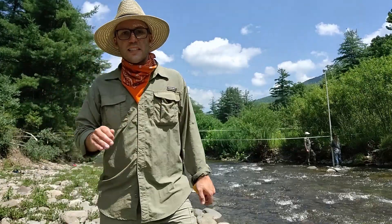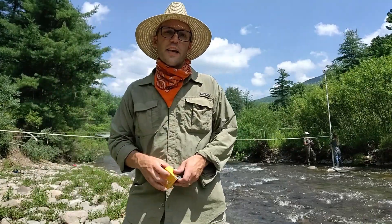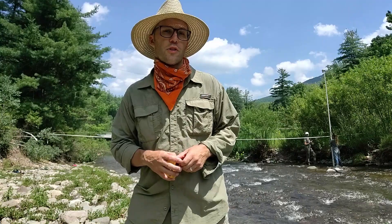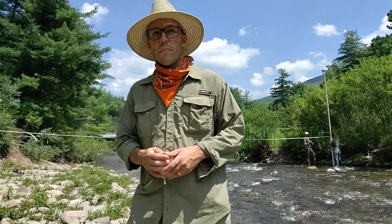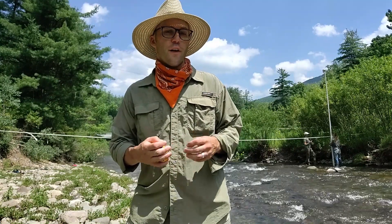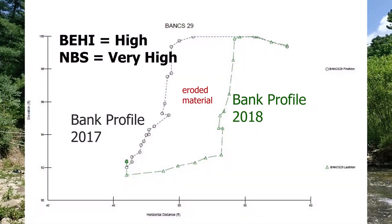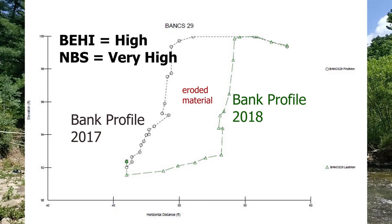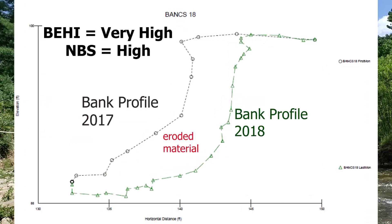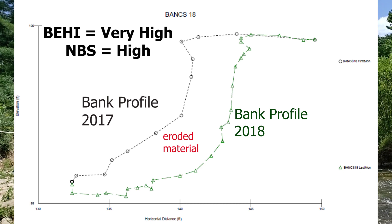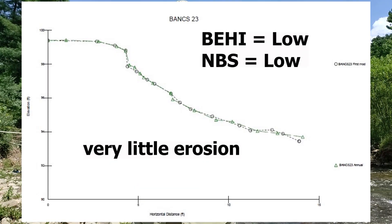In 2016, AWSMP funded the calibration of the Ashokan erosion rate model. By studying 36 banks with differing combinations of BEHI and NBS over a two-year period, we were able to establish their erosion rate. By plotting that measured erosion rate by their combined BEHI and NBS score, we were able to develop the predicted curves that we're validating today.